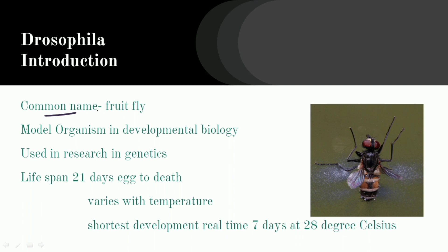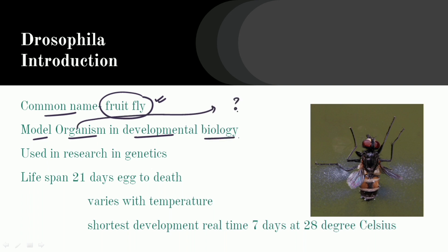The common name of Drosophila is fruit fly. It acts as a model organism in developmental biology. It is also used in research in genetics. The lifespan of Drosophila is 21 days.